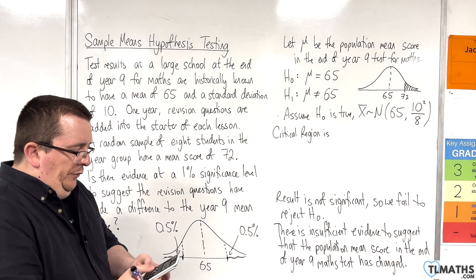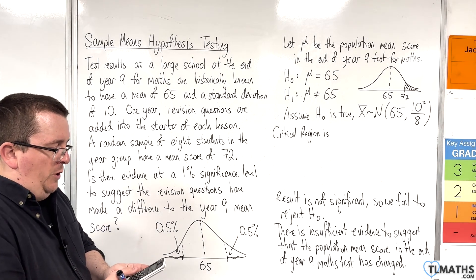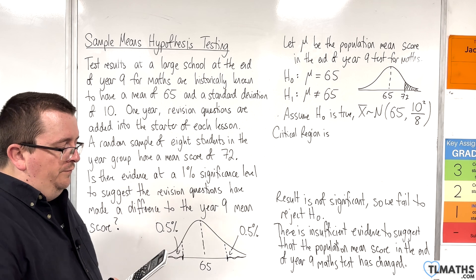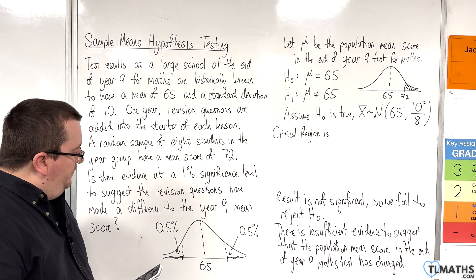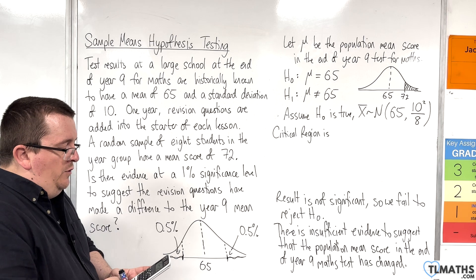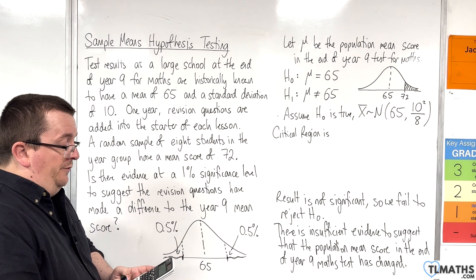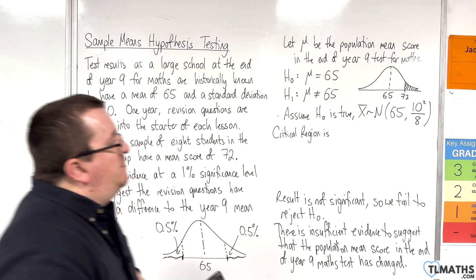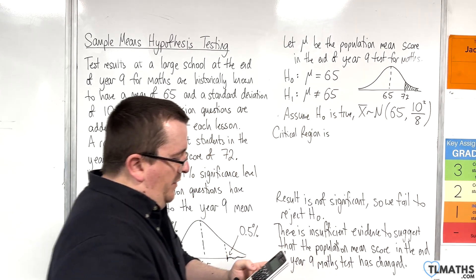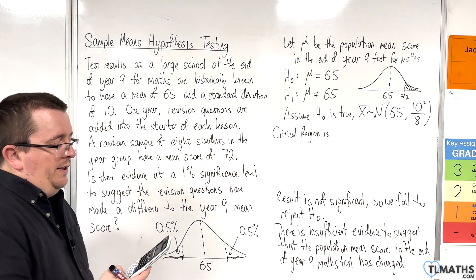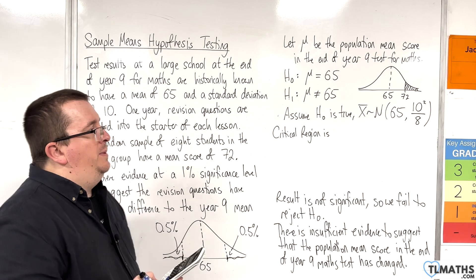So, I'm going to use, on my calculator, going to distribution and inverse normal. Now, I'm going to first of all look at the area at the bottom tail. So, I need to put in an area of 0.005. Sigma is the square root of 10 squared over 8. So, 10 divided by the square root of 8, you should see 3.5355 up here.